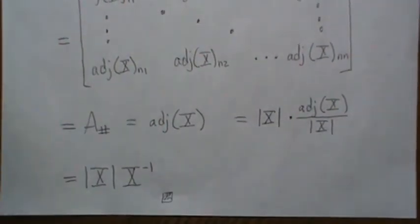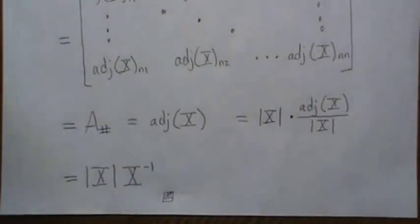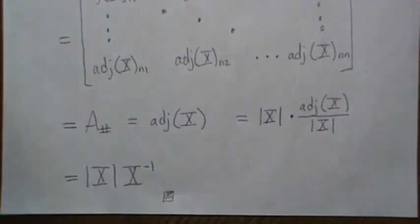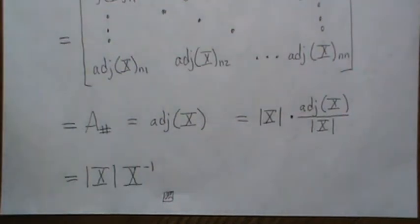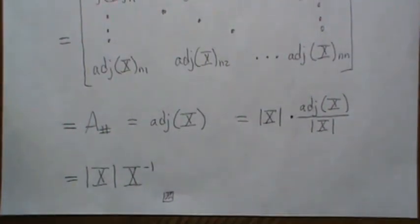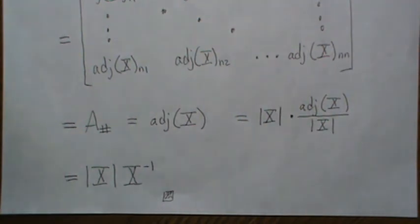That completes the proof of the derivative of the determinant with respect to matrix X. This is the first video in my build-up to finding the maximum likelihood estimator for the multivariate normal distribution. I hope you enjoyed it — please like and subscribe so you don't miss the next one.